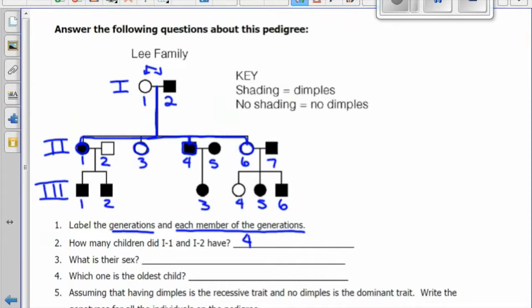The first two are females, male and then a female. The oldest child is the one on the left, 2-1.